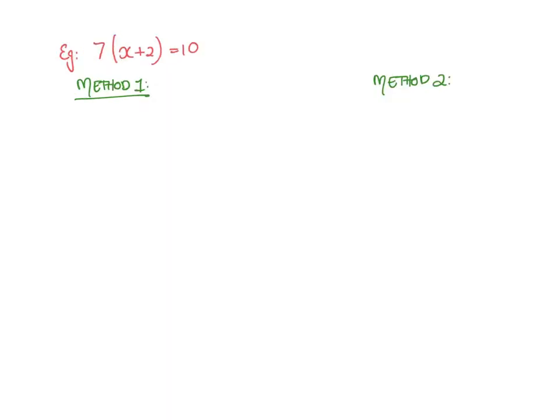And we'll have a look at another example. So if we have a look at this 7 times x plus 2 equals 10. So if we go about solving it by moving this 7 first, we'd be left with x plus 2 equals 10. Now that 7 was timesing, so it will divide on this side. And then we're left with x plus 2 equals 10 over 7. So we're going to move this 2 over, which would be minus 2.